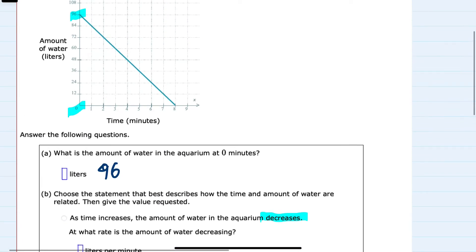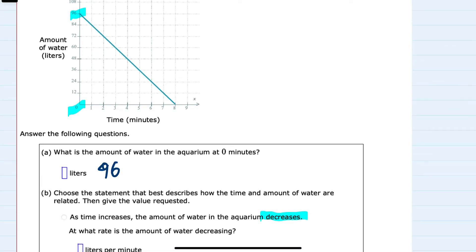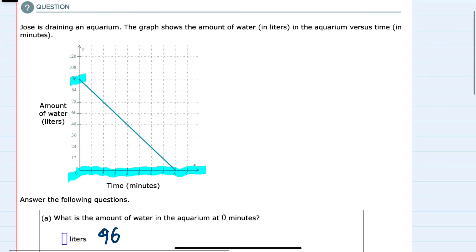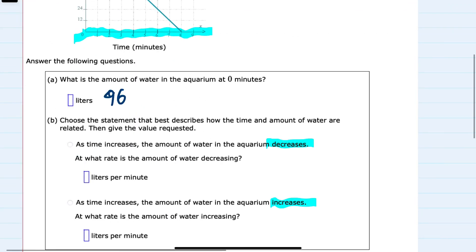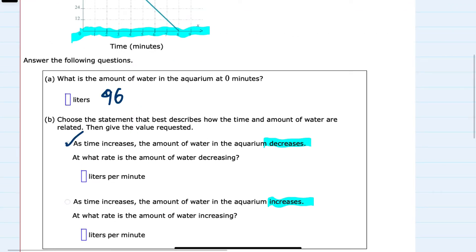So looking back here, we can see that as time moves forward, the amount of water is decreasing. After all, Jose is draining the aquarium. So we would choose the first option. It's decreasing.